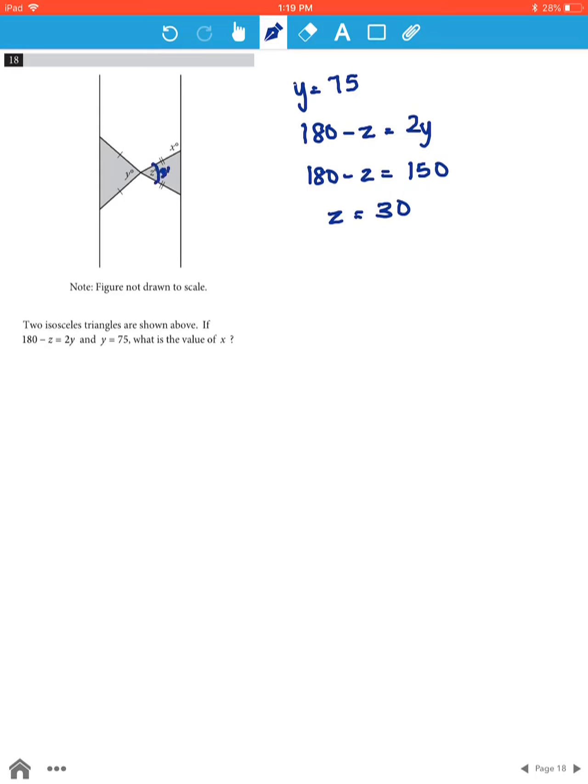Now that we know the value of z as 30, we can find these other two base angles because the angles are equal. You can let the base angles be equal to a.